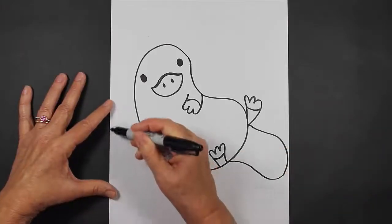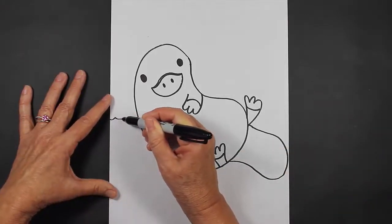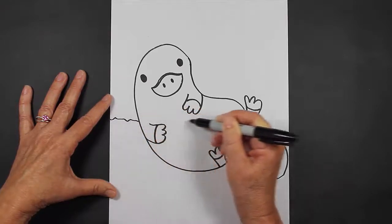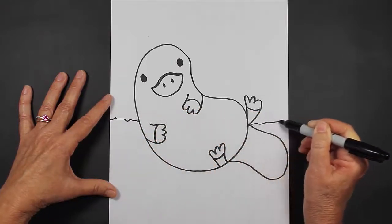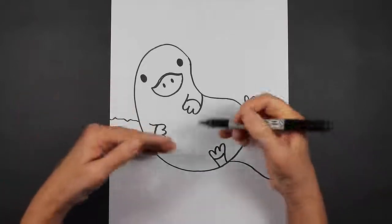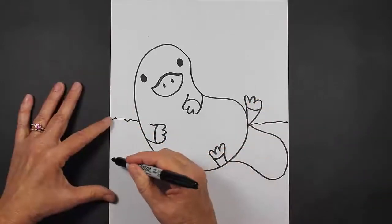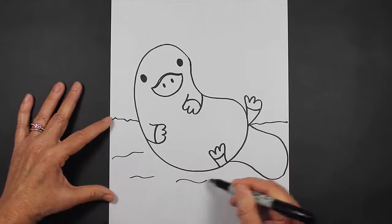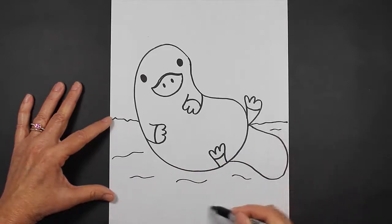All right, for the background, I'm going to make him in the water. So I'm going to make some waves, maybe coming out this way. So it looks like he's resting in the water. And so maybe I'll put some more wavy lines here that can represent water.